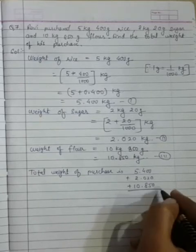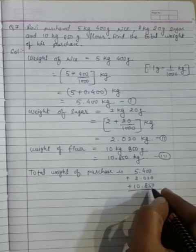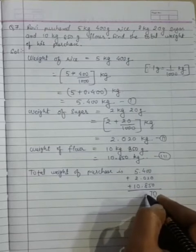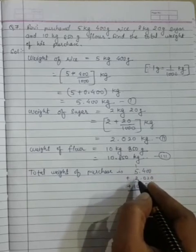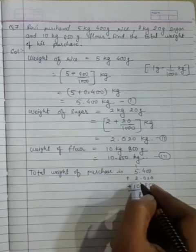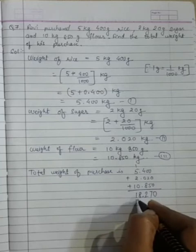So summing it up, 000 will be 0, 02 and 5 will be 7, 40 plus 8 will be 12. Carry will be 1. 1 plus 5, 6, 7, 8. Decimal will be at the place of decimal, and 1 will be at the place of one. So this is the total weight.